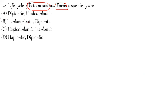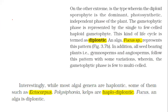Question 128: Life cycle of Ectocarpus and life cycle of Fucus. The life cycle of Ectocarpus is haplodiplontic; Fucus is diplontic. The correct answer is option B. NCERT extract: diplontic in Fucus; haplodiplontic in Ectocarpus, Polysiphonia, and kelps.